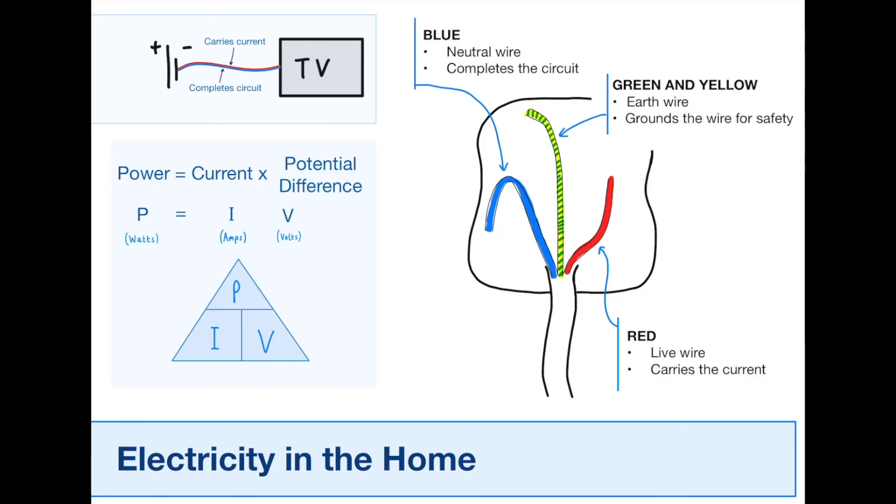What actually happens is all of this is just contained within the wire. It'll go up one way through the red wire, into the TV, and then back through the blue wire. So there's none of this big rectangle circuits in real life, really.